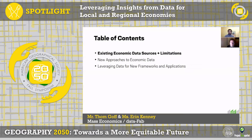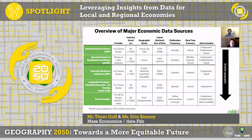First, just an overview of some of the existing economic data sources and their limitations. At the top are the two key data sources available at the six-digit NAICS code level. There are about a thousand of those industries, and that level of detail is often necessary for a whole slew of economic analyses, both academic and applied.